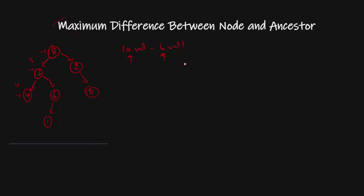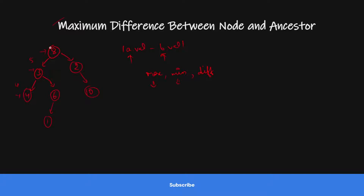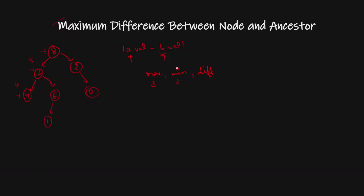So how would I do that? The basic intuition is I will maintain a max variable, a min variable, and a difference variable — 3 variables. While traversing, I will maintain what is my max so far in my current path, what is my min value during this path, and what is my maximum difference so far. Now let's understand with the help of code how we can solve this.